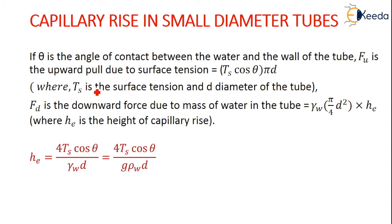What is F_u? It is upward pull which is due to the surface tension. It is taken as T_s cos θ into π d. So what is T_s? T_s is the surface tension. d is the diameter of the tube.